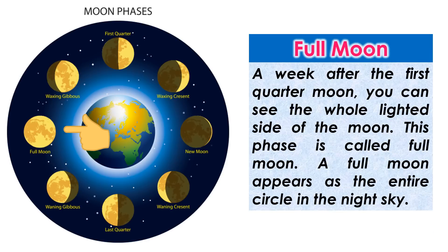Full moon. A week after the first quarter moon, you can see the whole lighted side of the moon. This phase is called full moon. A full moon appears as the entire circle in the night sky.